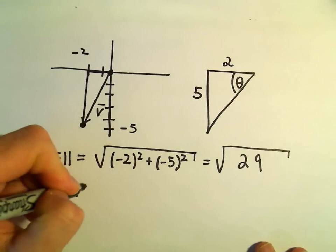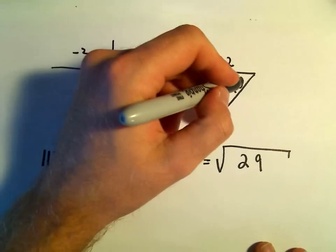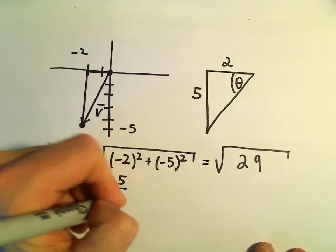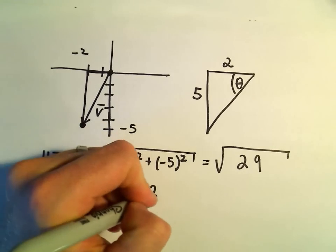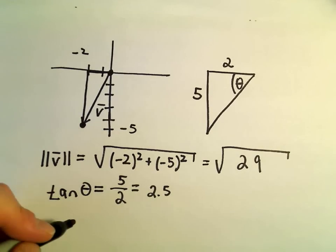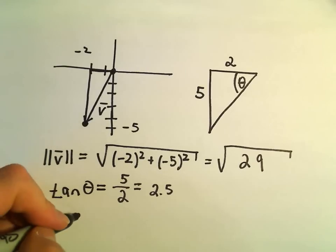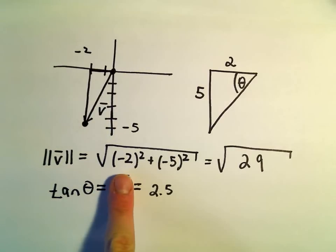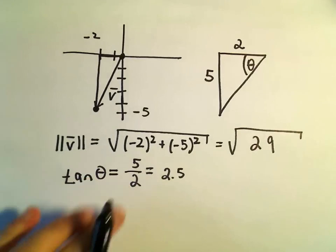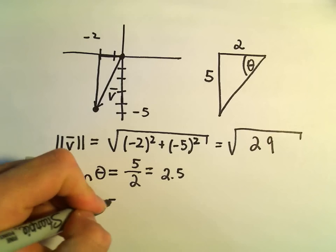Now I'm simply going to take tangent of theta. Tangent is opposite over adjacent, so 5 over 2, that's 2.5. We've got tangent of theta equals 2.5. To solve for theta, we can use inverse tangent.